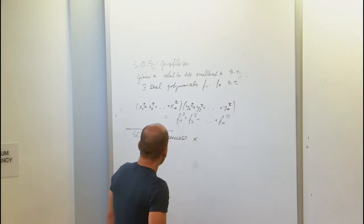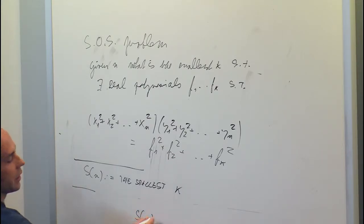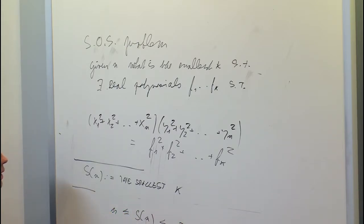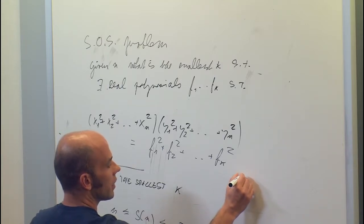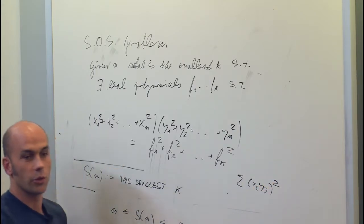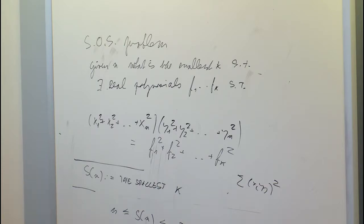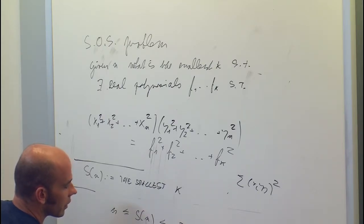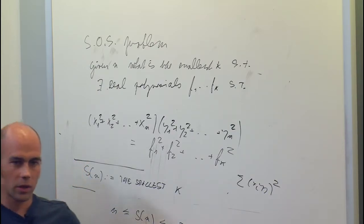It's a very simple question. You can see quite easily that the trivial bounds on S(n) are somewhere between n and n². The upper bound is easy because if you just open the brackets you write this thing as the sum of all xᵢⱼ², so you need O(n²). The lower bound is an exercise. Actually the upper bound can be improved to O(n² / log n), and this is essentially the best upper bound we know.